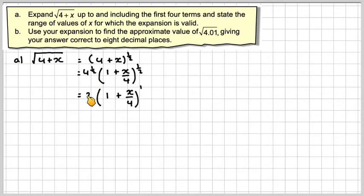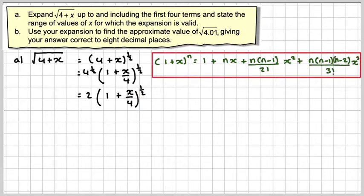So this will become square root of 4 is 2 and then we will have to expand 1 plus x over 4 to the half using the binomial expansion of 1 plus x to the n. n will be a half and x in our case will be x over 4.